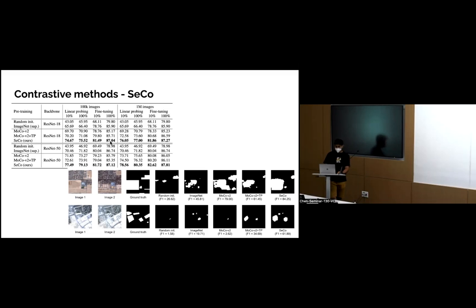With 100% fine-tuning on labeled data, their initialization actually beats starting from ImageNet — apparently the first time an unsupervised method outperformed supervised pretraining with full training data. And with only 1% labeled data, you're already in a much better starting position than with ImageNet weights.